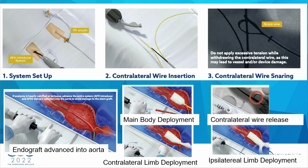In broad strokes, you gain access and deliver the device over a stiff wire. A contralateral wire is also fed into the same sheath, then snared at the aortoiliac bifurcation and pulled down through the contralateral limb and groin. As the device is advanced into the aorta, the main body is deployed, then the contralateral limb, the wire is released, a pigtail is placed back into the endograft, and then the ipsilateral limb is released.